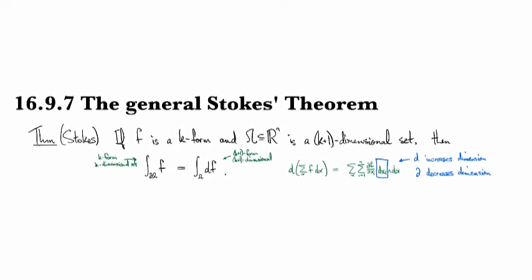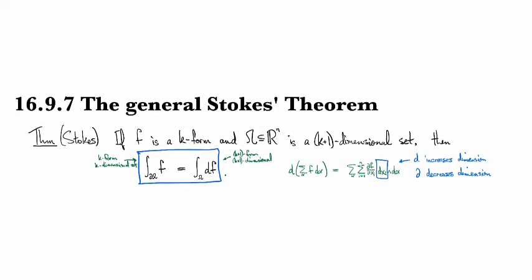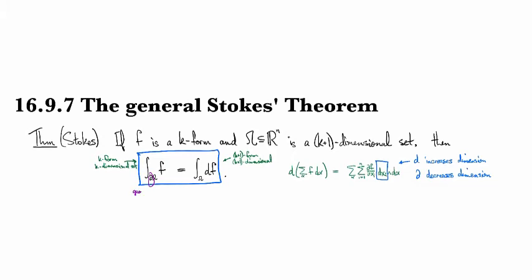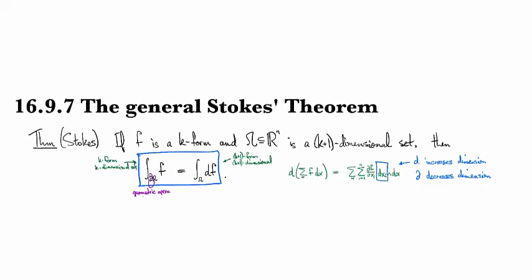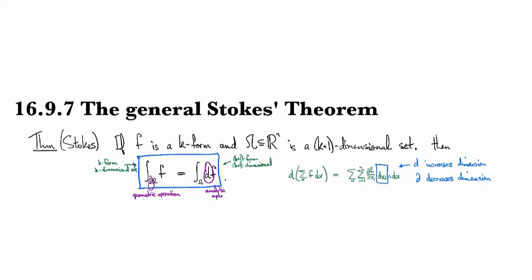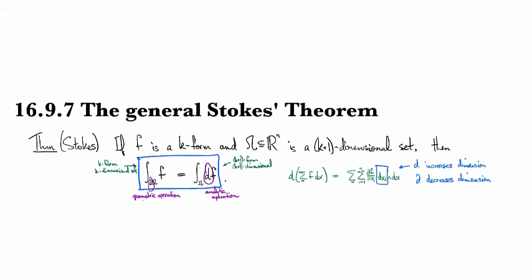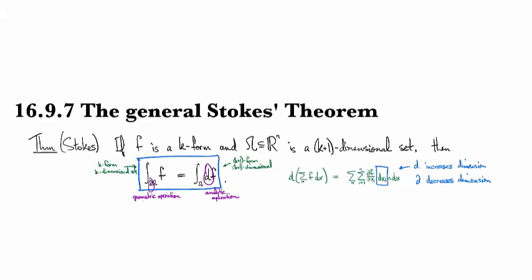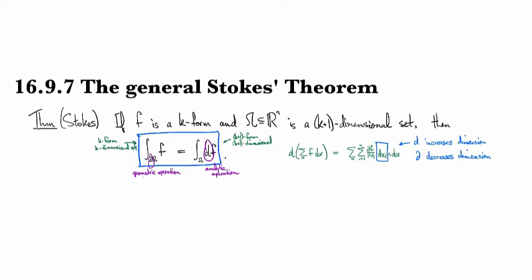This formula shows a fundamental equivalence: on one side, the boundary operator — a purely geometric operation defined in terms of sets — and on the other hand, the differential operator D — a purely analytic operation with nothing to do with geometry. But somehow, fundamentally, they are the same thing. It's remarkable, and there are interesting consequences that follow from this.